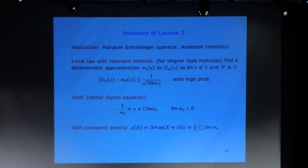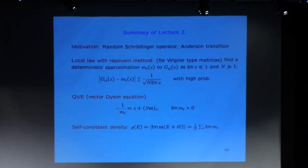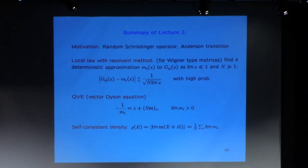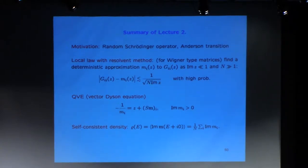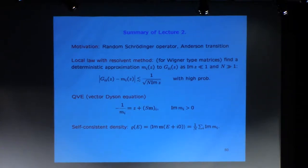The main goal is to prove the local law, and we are using the resolvent method for Wigner-type matrices. The local law means that you want to understand the resolvent G, which is 1 over (H minus z), the resolvent of the random matrix. G_ii refers to the i-th diagonal matrix element. We'd like to understand this random quantity, which turns out to be close to a deterministic number called M_i, where closeness is bounded explicitly by 1 over sqrt(N) times the imaginary part of z.